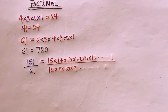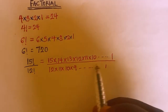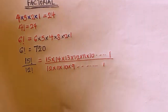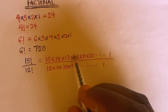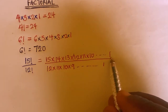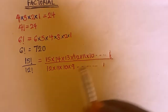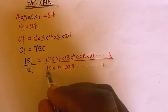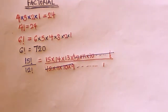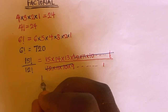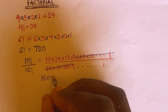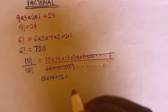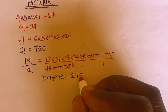Instead of writing all this out at length, you can see that from 12 down to 1 is exactly 12 factorial. So you can simply cancel out everything from 12 factorial in the numerator with the 12 factorial in the denominator. Then you are left with 15 multiplied by 14 multiplied by 13, which equals 2,730.